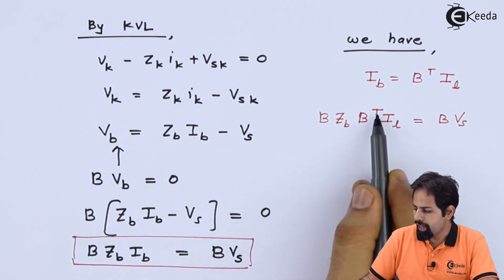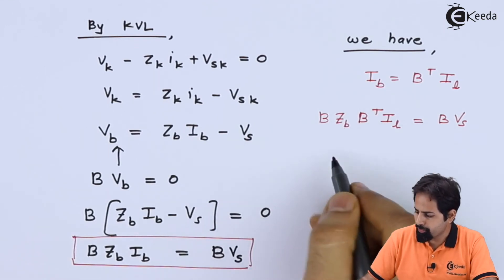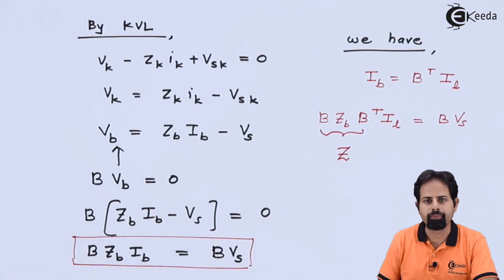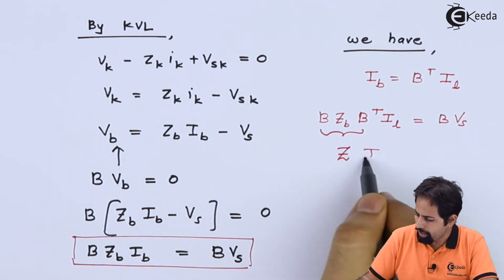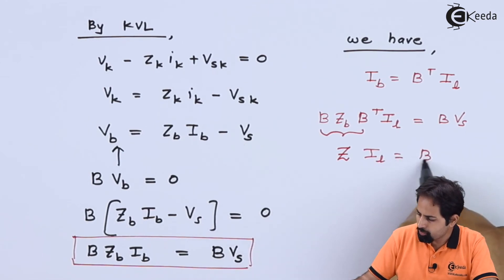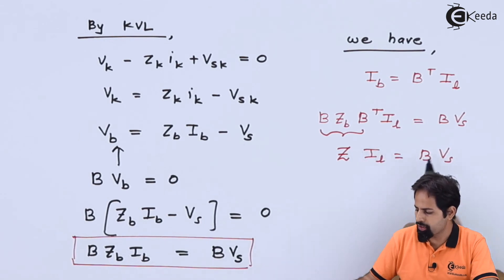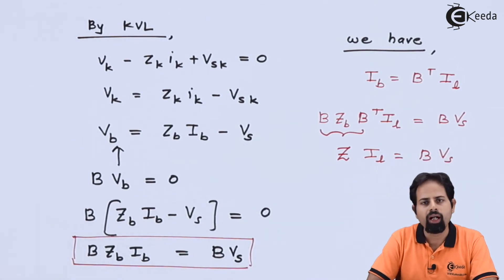This B ZB and B transpose is nothing but can be called as, this term can be called as Z, the impedance into IL is equal to B into VS. As we know that Z into I is V, so left hand side is some voltage, right hand side also is a matrix B multiplied by VS that is source voltage. So it is voltage equal to voltage and that proves our identity.